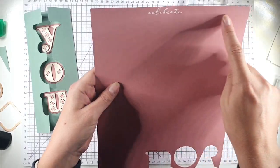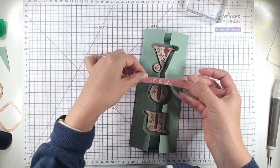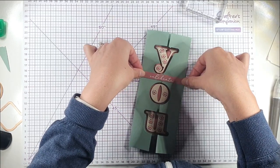Then I'm going to cut that down into a strip. Then I've got this nice slim belly band and I'm going to pop this on here.